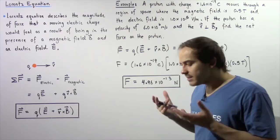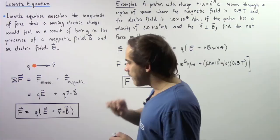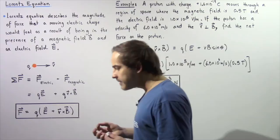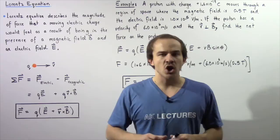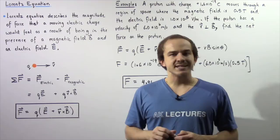So what exactly does the Lorentz equation tell us? The Lorentz equation, which is given by the following equation we'll talk about in just a moment, essentially describes the magnitude of net force that acts on a moving electric charge that is in the presence of a magnetic field B, as well as an electric field E.